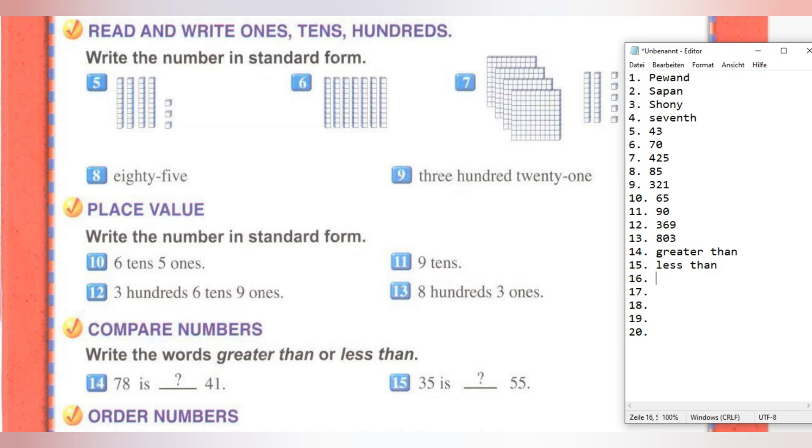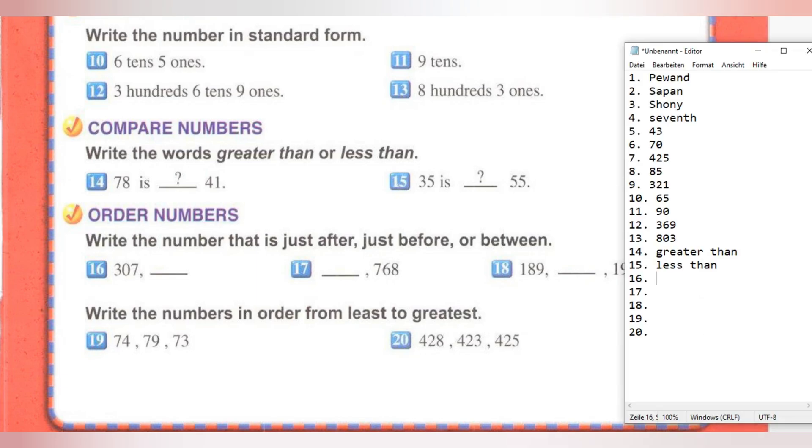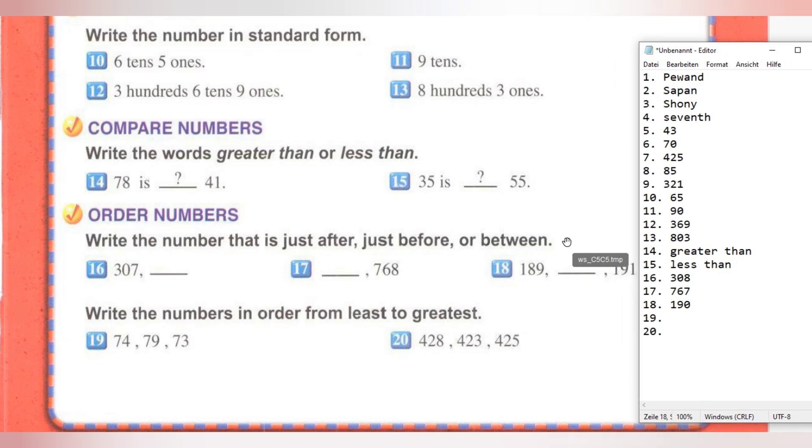Task 16 is from block Order Numbers. Write the number that is just after, just before, or between. After 307 comes 308. Task 17: after 767 comes 768. Task 18: after 189 comes 190 and 191.